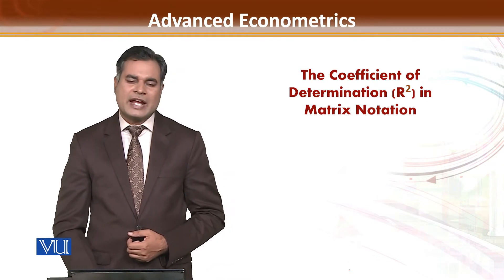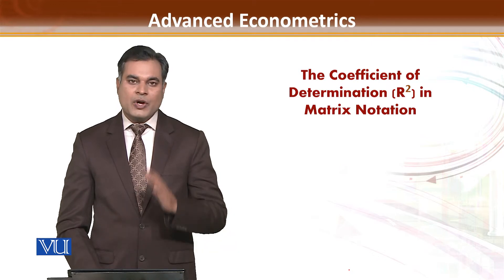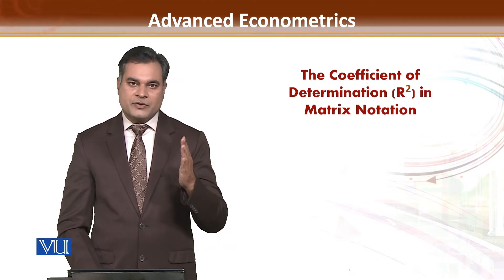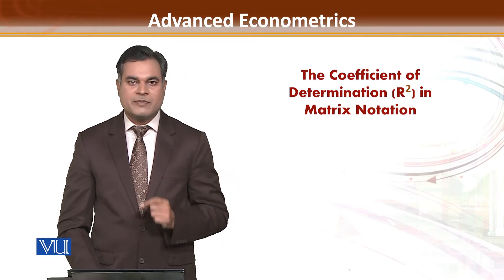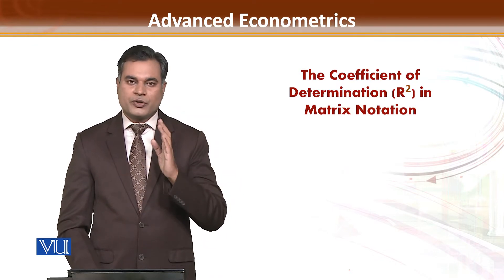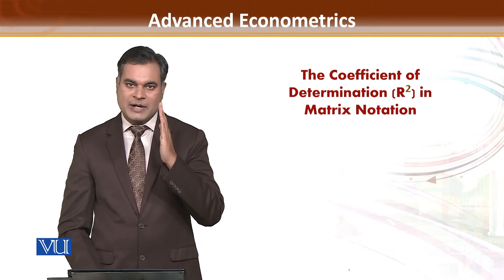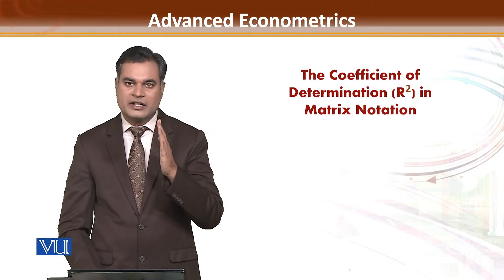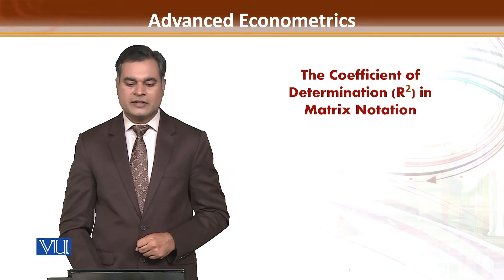You have already discussed about coefficient of determination, but now how we will estimate it using matrices approach from our model, and how do we ensure that it shows our best model or not. This is coefficient of determination, which we simply call R square.